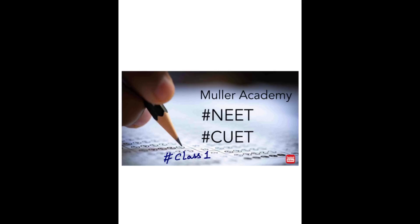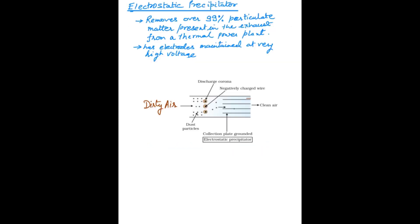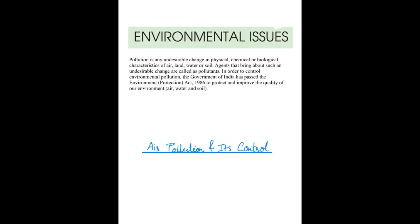Before starting air pollution, let us understand what is pollution. Pollution is any undesirable change in physical, chemical, or biological characteristics of air, land, water, or soil, and the agents that bring this pollution are known as pollutants.